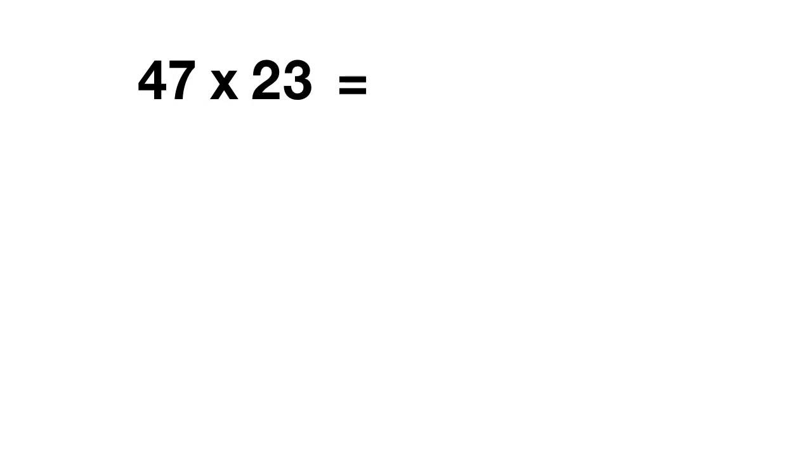Now it's time for you to practice on your own. Use an area model to figure out what 47 times 23 equals. In your area model, you'll split up 47 into 4 tens, or 40, and 7 ones, or 7. You'll split 23 up into 2 tens, or 20, and 3 ones, 3.